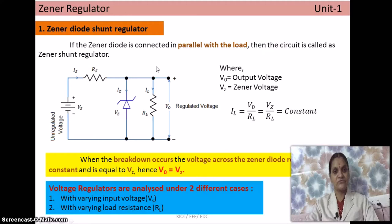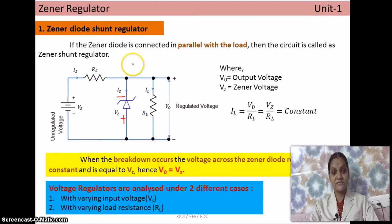This circuit is the reverse biasing circuit: the positive terminal of the source is connected to the negative terminal of the diode, and the negative of the source is connected to the positive terminal of the diode. Additionally, the load resistance RL is connected in parallel with the zener diode — hence the name 'zener diode shunt regulator.' The output voltage V0 is tapped across the load resistance RL.